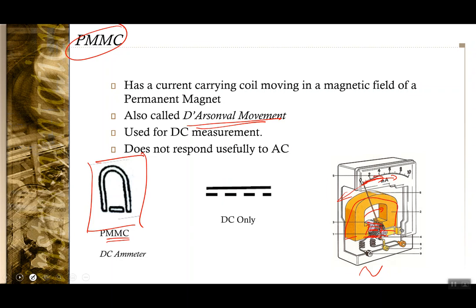This is the symbol generally used to depict a PMMC meter, and you will also see a symbol indicating DC only — AC cannot be measured using this instrument. So on a PMMC meter, you will typically see these two symbols.